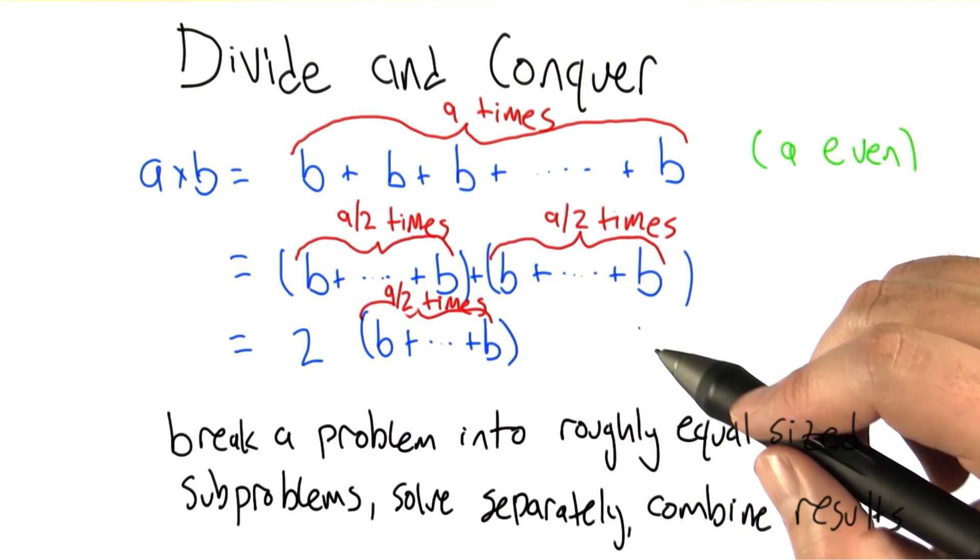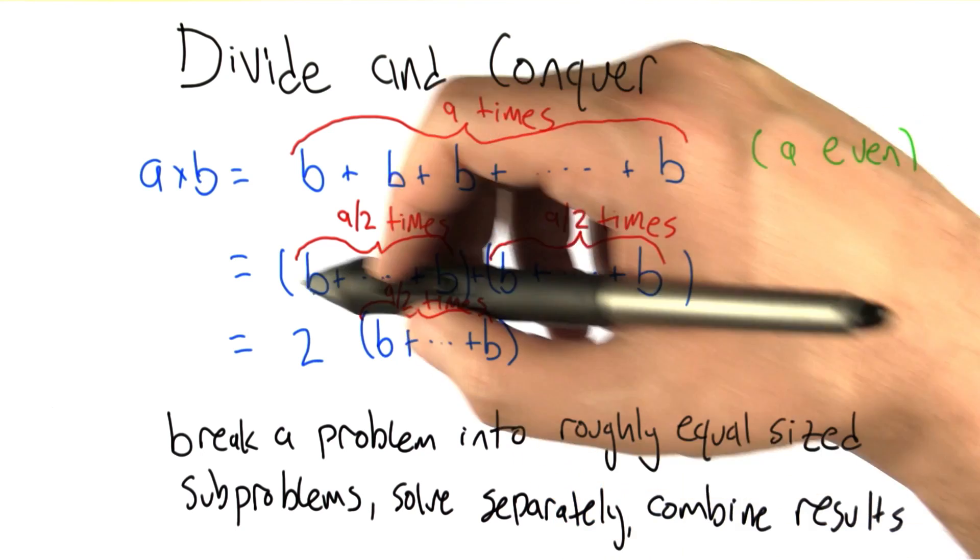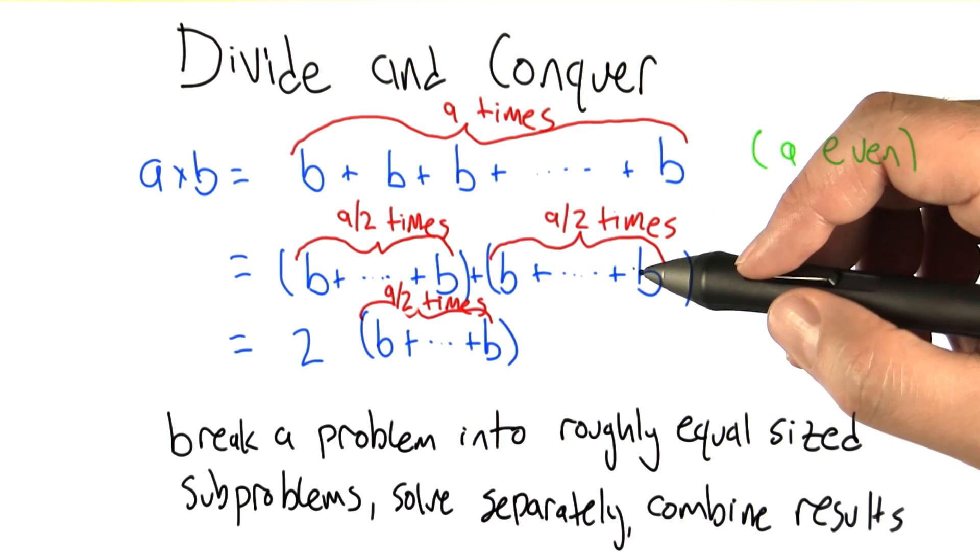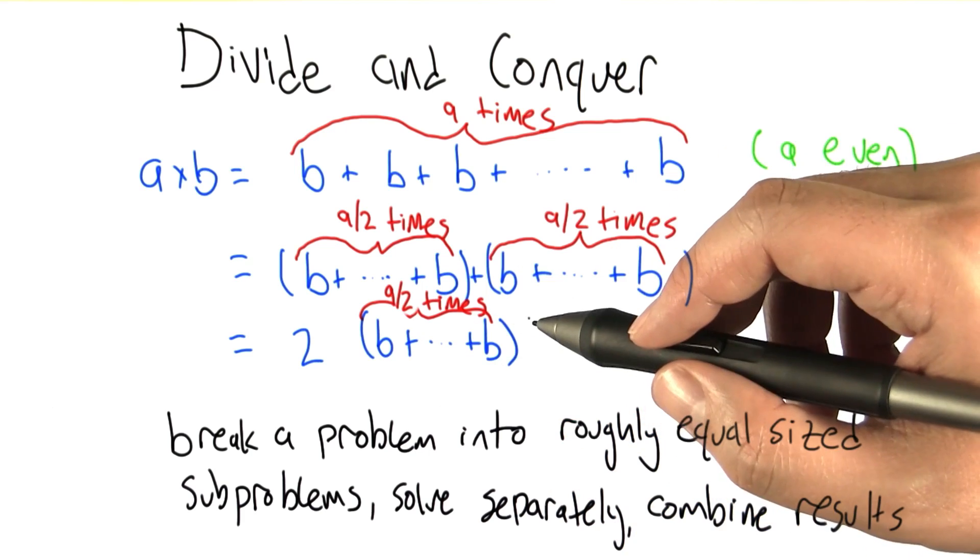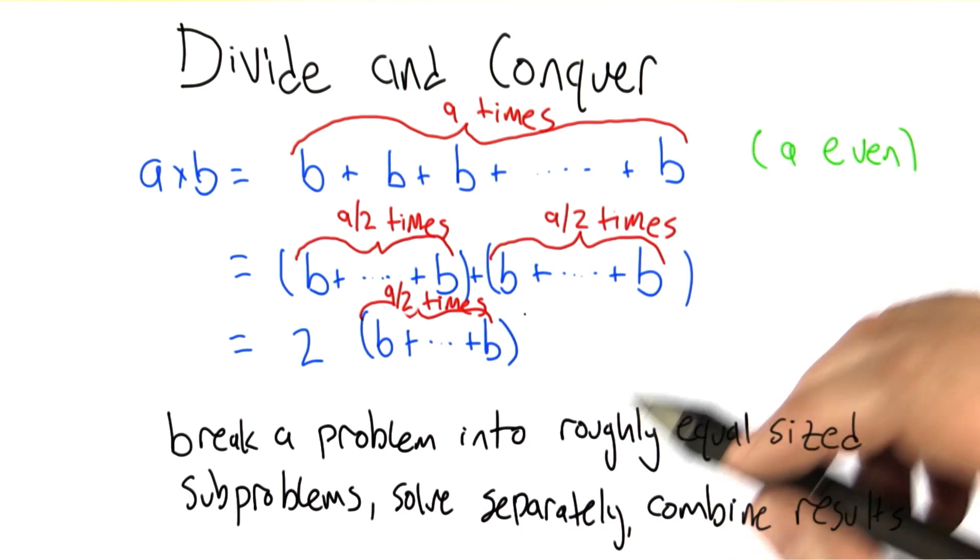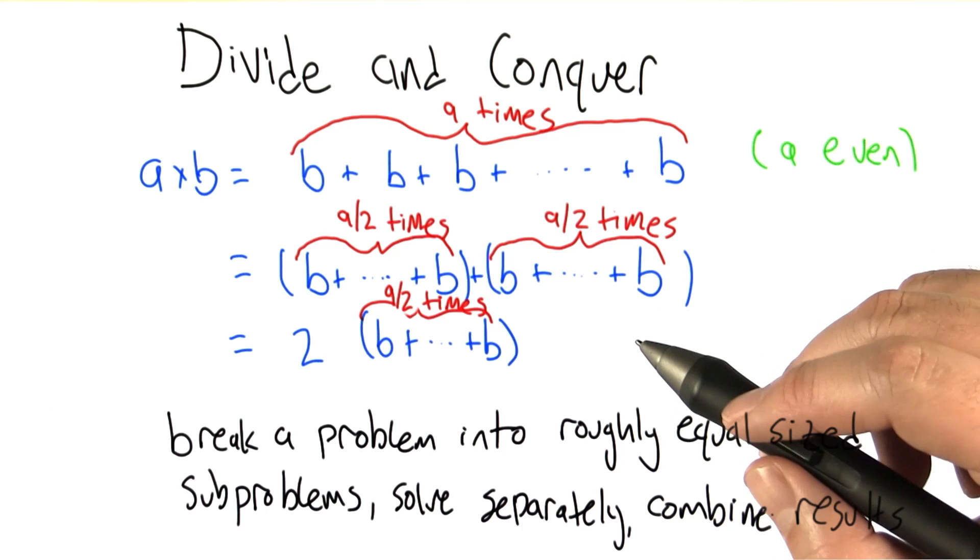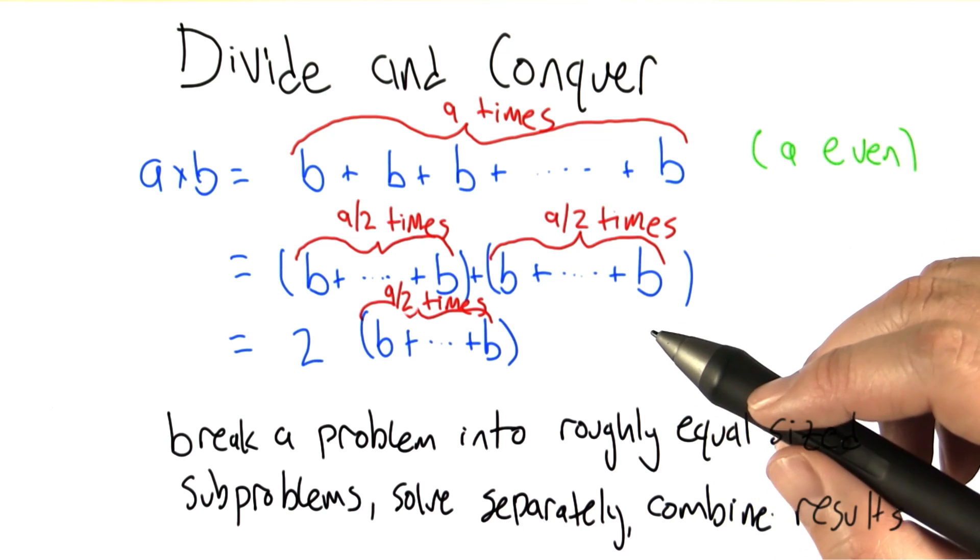And in this particular instance, the subproblems themselves, these two sums, are identical. So it only has to be done once. So you're saving yourself half the effort every time that you do this. Half keeps compounding, and that's how we get down to a logarithmic number of steps instead of a linear number of steps.